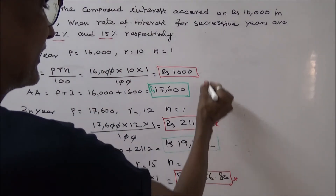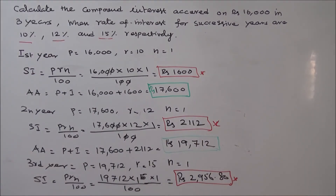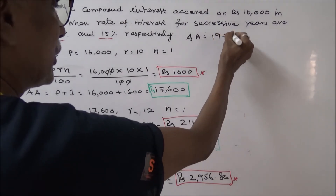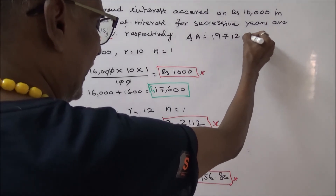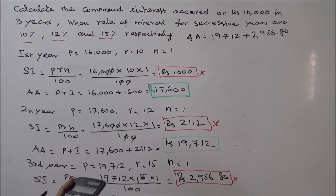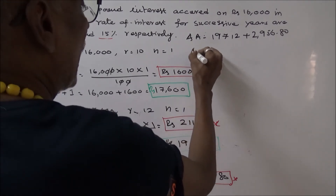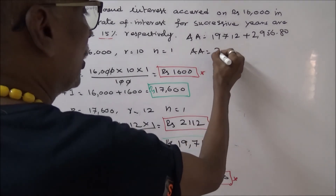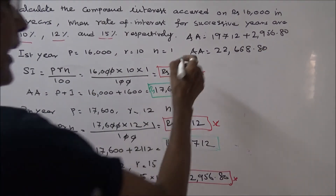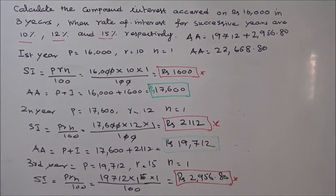That is equal to 2,956.80 rupees. This is the interest amount received at the end of the third year. The accrued amount is 19,712 plus 2,956.80, equal to 22,668.80 rupees. This is the amount received at the end of the third year.